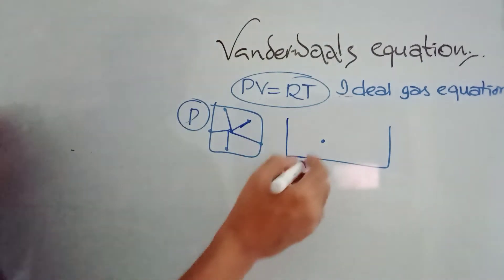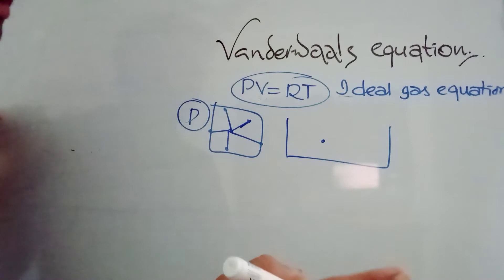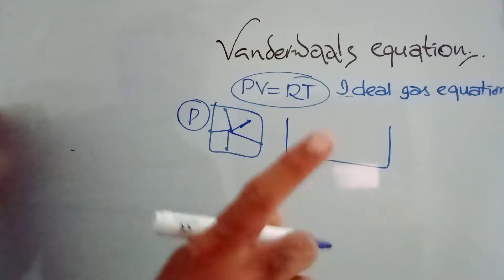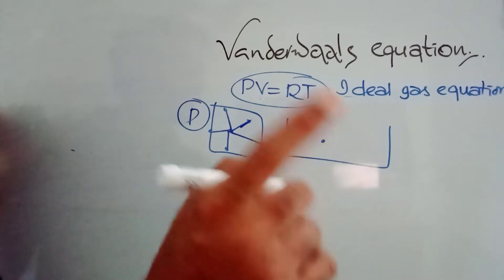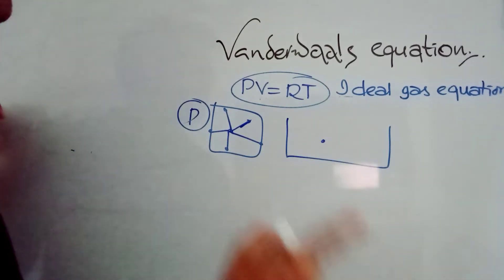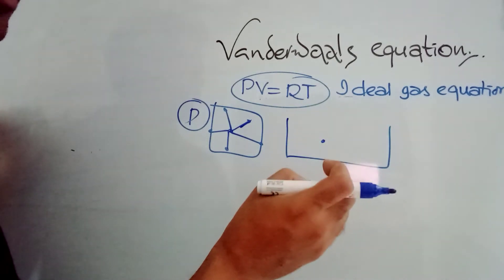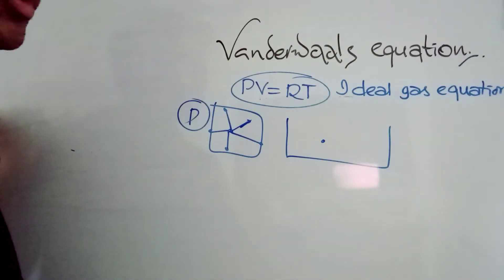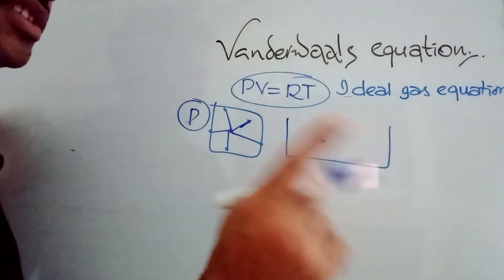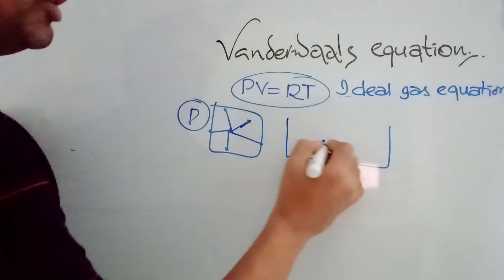Because if attractions are not there, a gas cannot turn into a liquid. Gases are compressible and we can convert them into liquids, so there are attractions. And when molecules are very close, there are definitely some repulsion forces also. So gases have both attractions as well as repulsions.